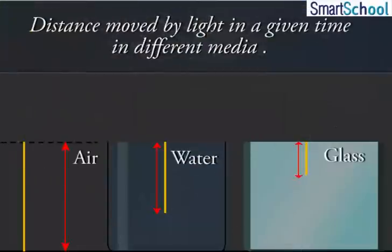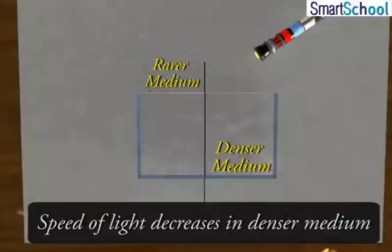Distance moved by light in a given time in different media. When light travels from a rarer medium to a denser medium, its speed decreases.